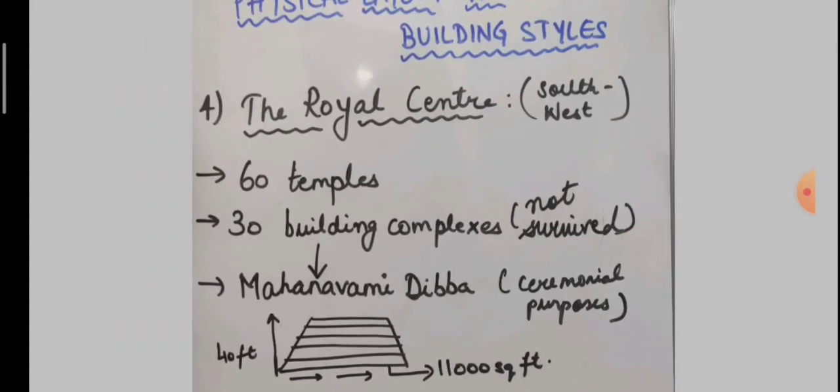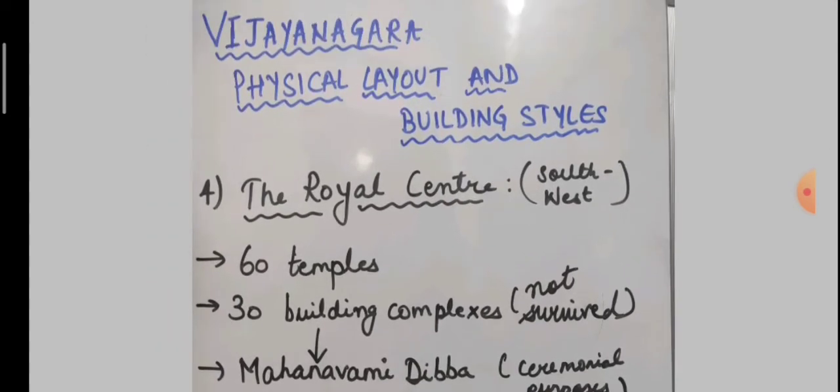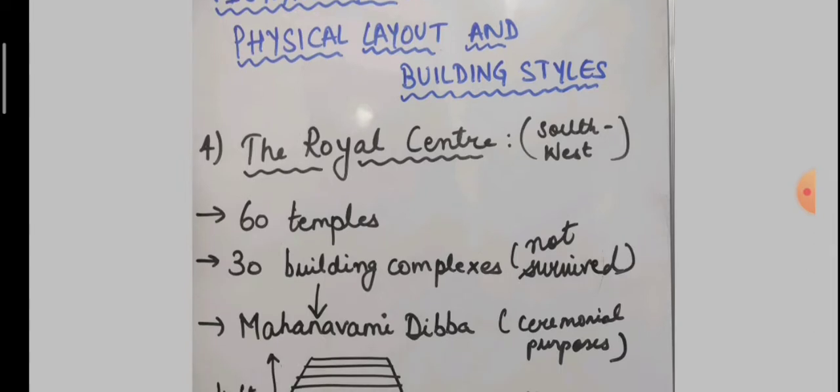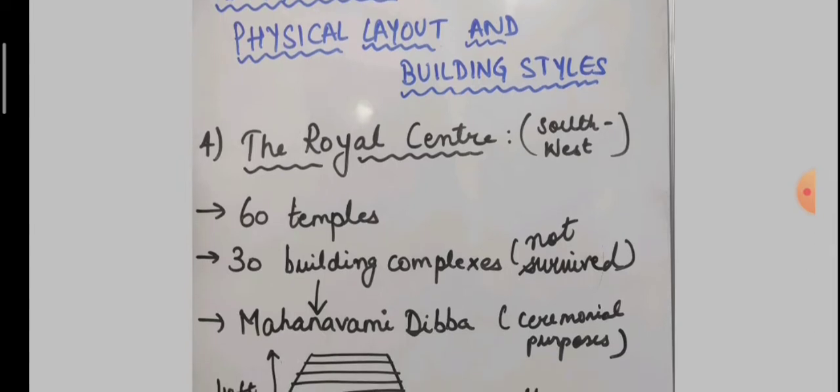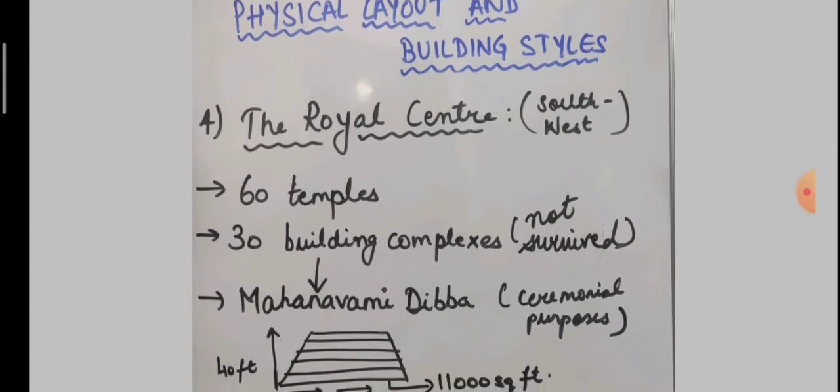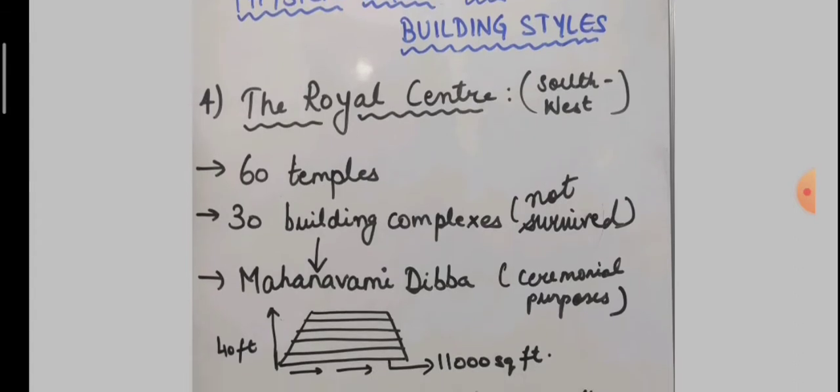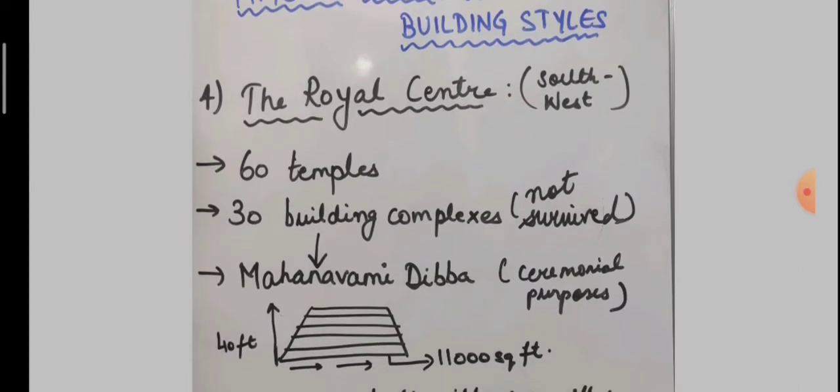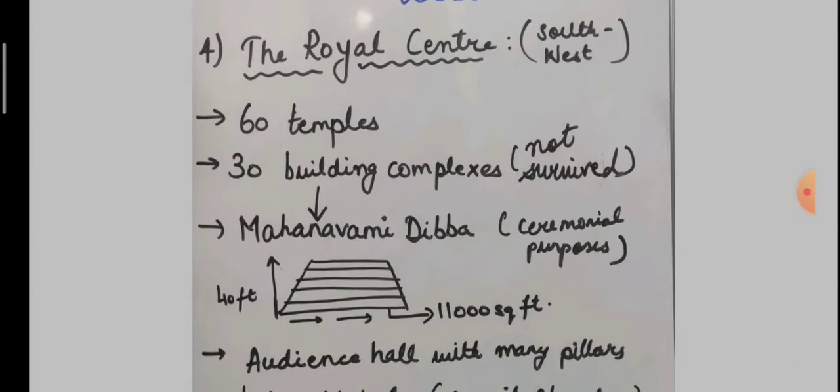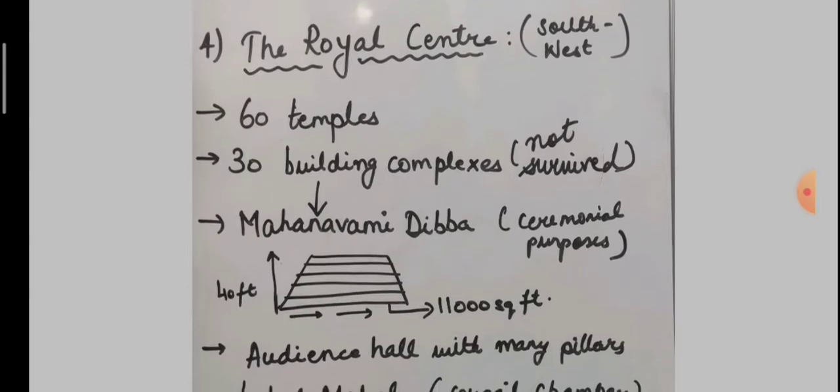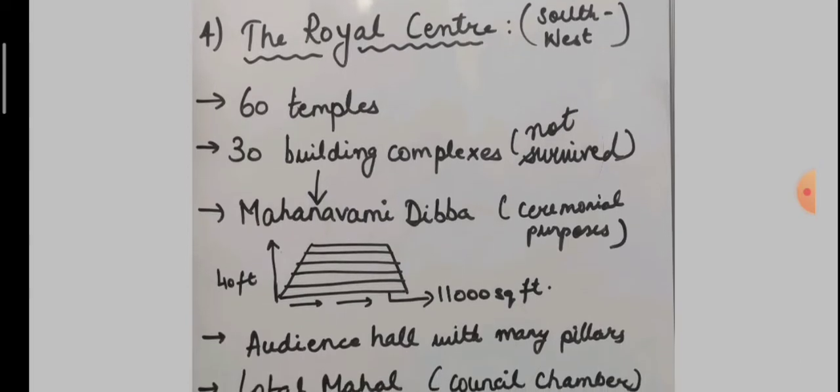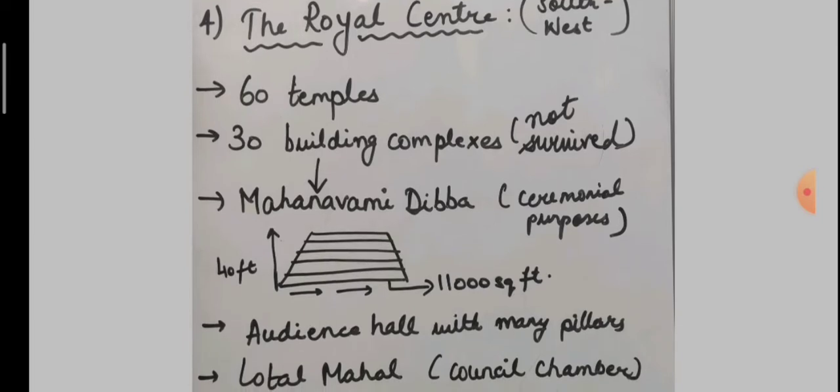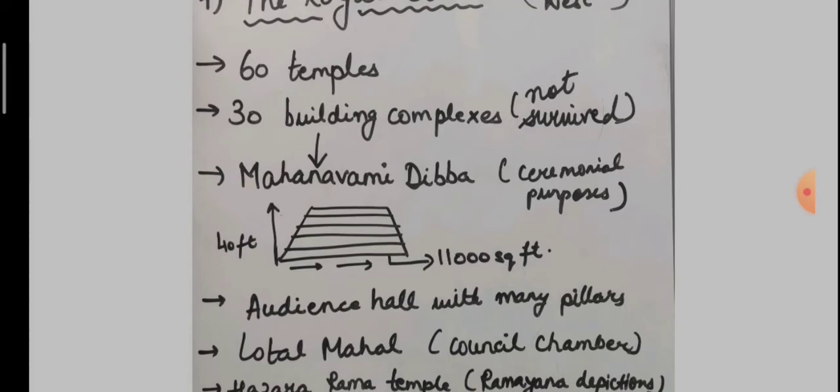Now we are going to study about the Royal Center, which is located in the southwestern part of the settlement. Although designated as a royal center, it included over 60 temples. The patronage of temples and cults was important for the rulers who were trying to establish their legitimacy and their authority over their subjects.